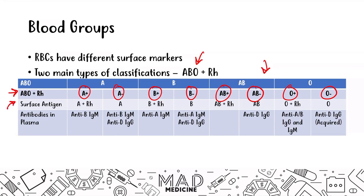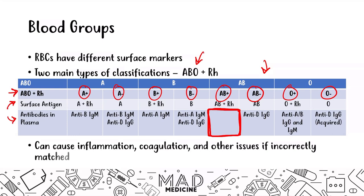Because of the certain blood group you have, you're going to have specific surface antigens, and you're also going to have specific antibodies in the plasma — usually to the other blood group subtypes. In the ABO system, all subgroups are going to have specific plasma antibodies, except for AB positive, which has no plasma antibodies. If you do not transfuse the proper blood groups to a person, you can cause inflammation, coagulation, and many other issues, so it's very important to match blood groups based on surface markers when transfusing patients.